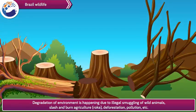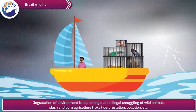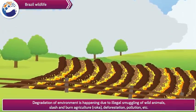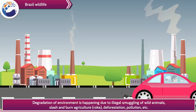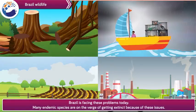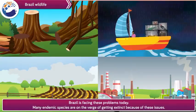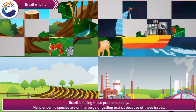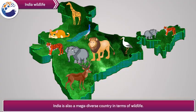Degradation of environment is happening due to illegal smuggling of wild animals, slash-and-burn agriculture, deforestation, pollution, etc. Brazil is facing these problems today. Many endemic species are on the verge of getting extinct because of these issues.